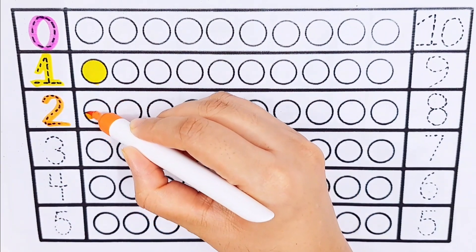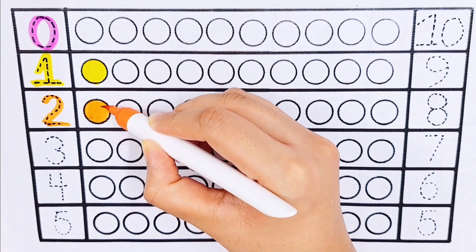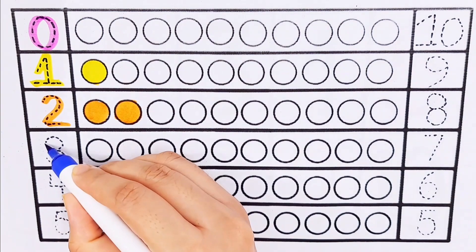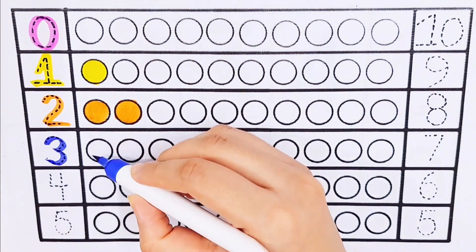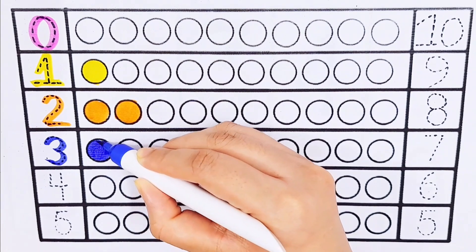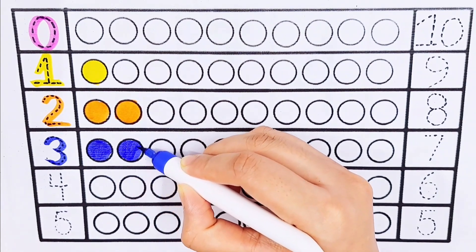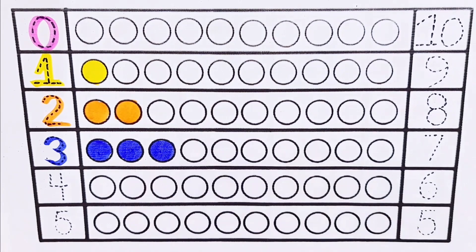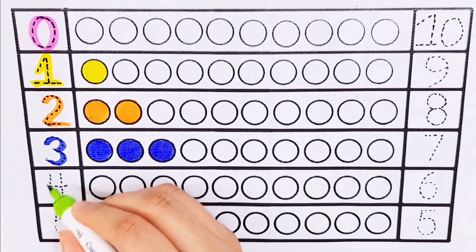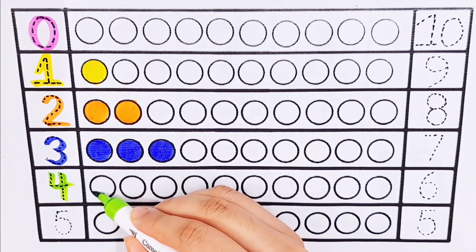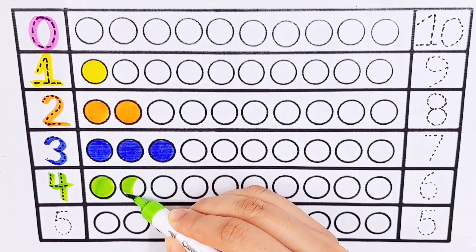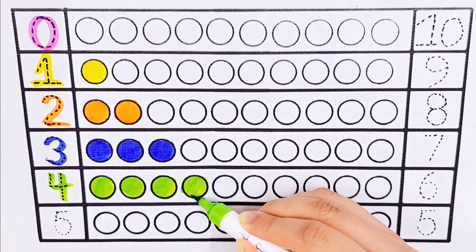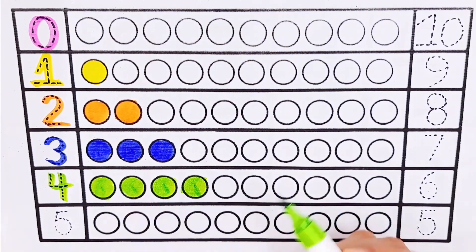Number two — two balls. Number three — three balls. One, two, three — three balls. Number four. One, two, three, four — four balls.